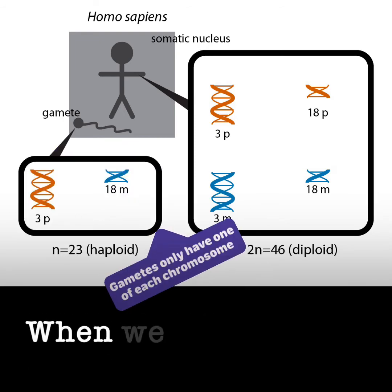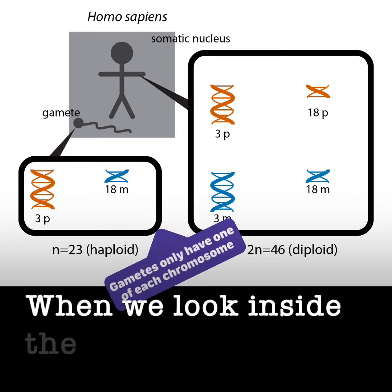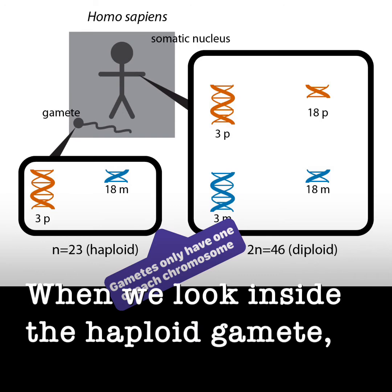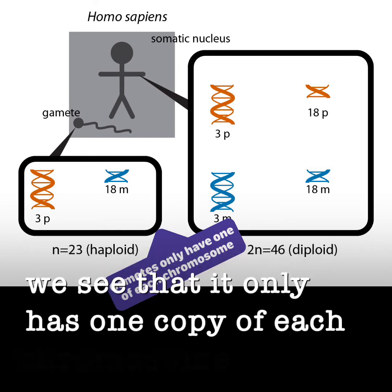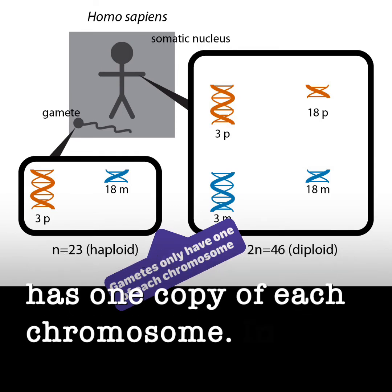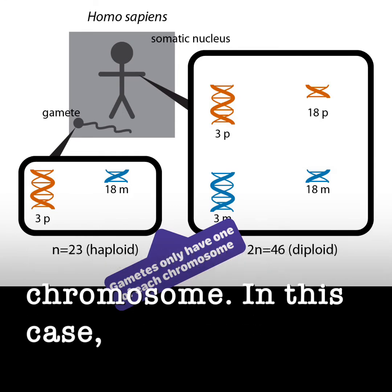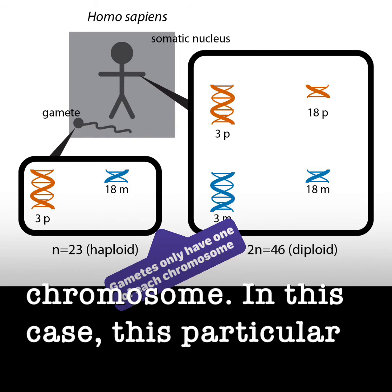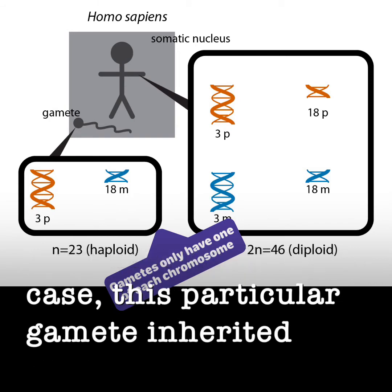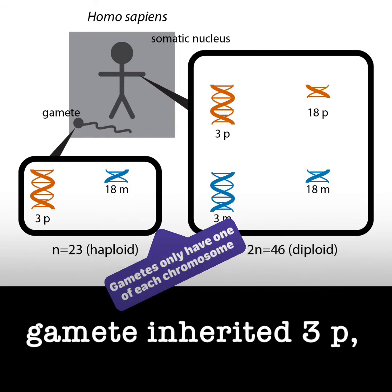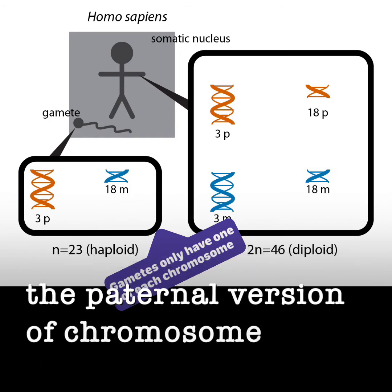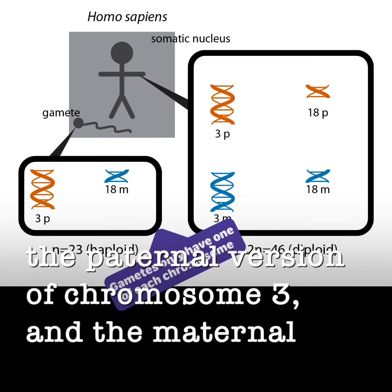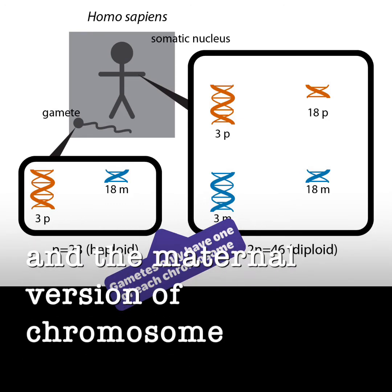When we look inside the haploid gamete, we see that it only has one copy of each chromosome. In this case, this particular gamete inherited 3P, the paternal version of chromosome 3, and the maternal version of chromosome 18.